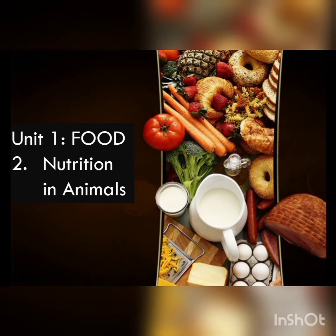We have seen how many animals are taking their food. We have divided animals into different categories of consumers: Herbivores, Carnivores, and Omnivores. Herbivores eat only plants. Carnivores eat only meat. And Omnivores eat both plants and animals.